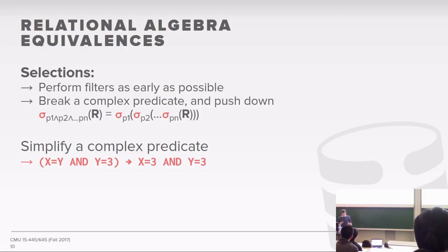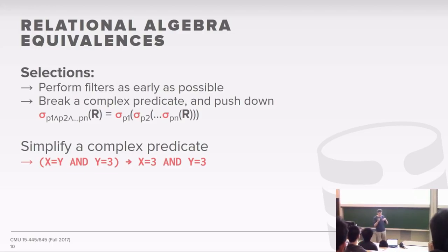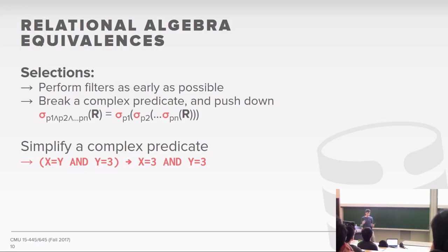There are a bunch of these rules you can apply for different types of queries. For selections, you want to filter tuples as early as possible. In the case of complex expressions, push down to different parts of the tree so you do filtering on each table before the join — the join is always the slowest part. You can also simplify complex predicates using Boolean logic. For example, if x equals y and y equals 3, that's equivalent to x equals 3 and y equals 3, and you can split those into separate filters run before the join.